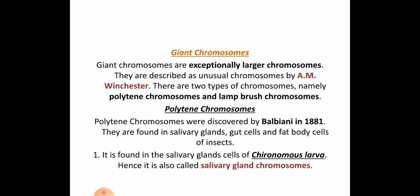Giant chromosomes were described by A.M. Winster. He explained there are two types of giant chromosomes: the polytene chromosome and the lampbrush chromosome.